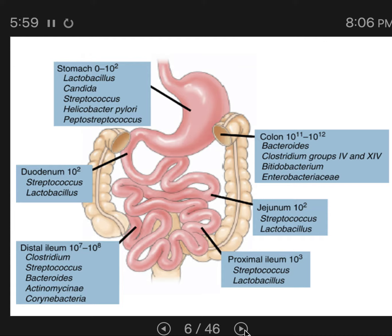Here's an image of your digestive tract. The total surface area on which microbes can live is about 400 square meters, which is over 4,000 square feet.